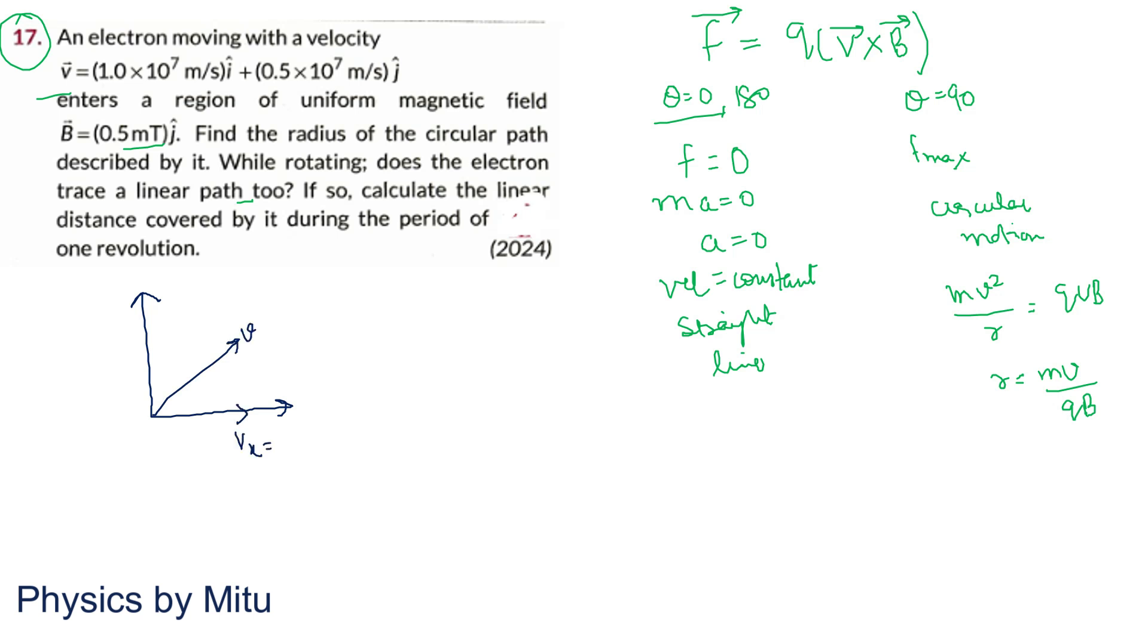VX is 1 into 10 to the 7 meter per second along X direction. And the Y component is VY which is 0.5 into 10 to the 7.